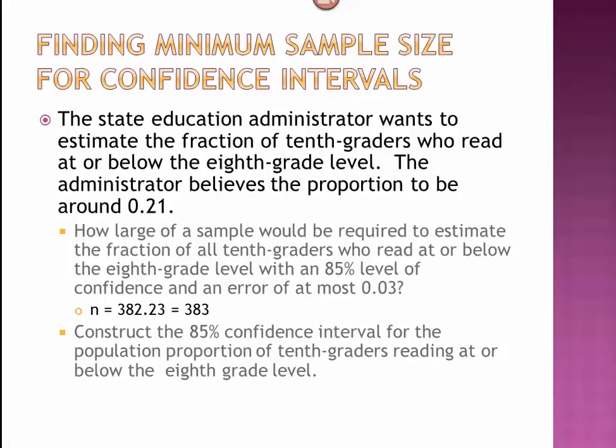The second part: Construct a 95% confidence interval for the population proportion of 10th graders reading at or below the 8th grade level. Our answer is 0.18 all the way up to 0.24. So our administrator estimates that it's somewhere between 18 and 24%. This concludes this section on confidence intervals for proportions. Thank you.